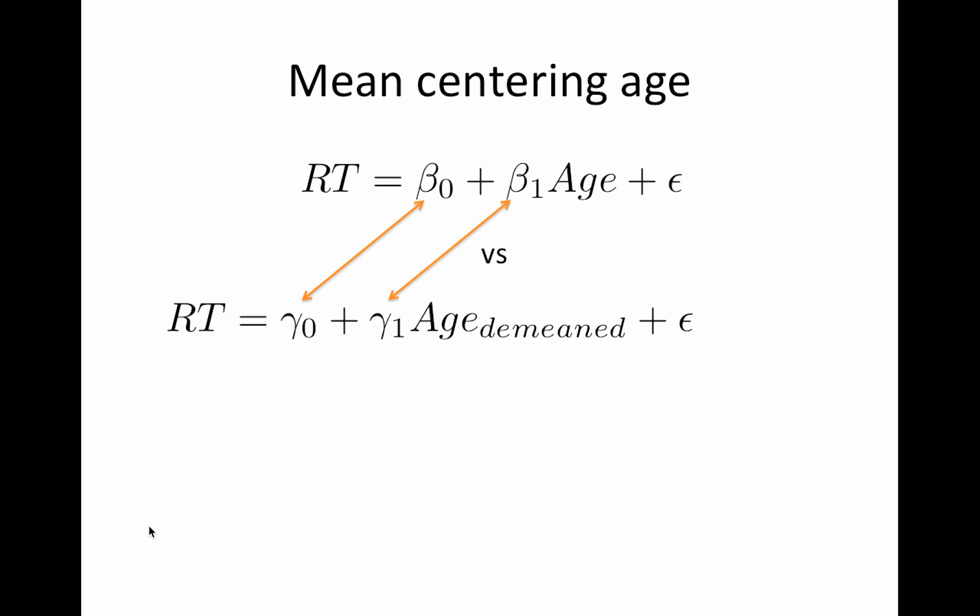So what I'm going to do in order to understand mean centering is I'm going to compare these two regressions. So the top is the one that we have seen before. We're just modeling reaction time as a function of beta naught plus beta 1 times age. The second one's identical. I'm using gammas instead of betas because the model is parameterized differently because I'm using demeaned age instead of age. So our goal is to compare beta naught to gamma naught and beta 1 to gamma 1. And if you're wondering what demeaned age is, it's simply taking age minus the mean of age. So for each subject, you would replace their age with the value of their age minus the mean of age.